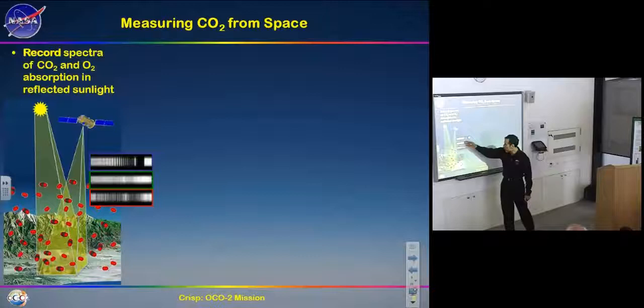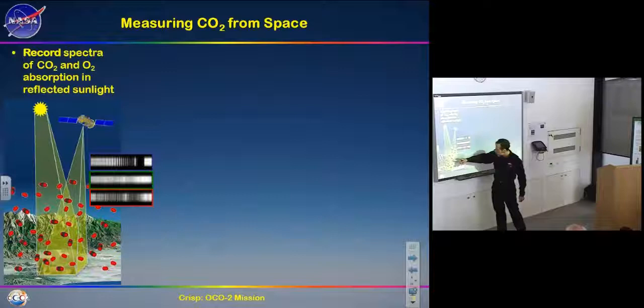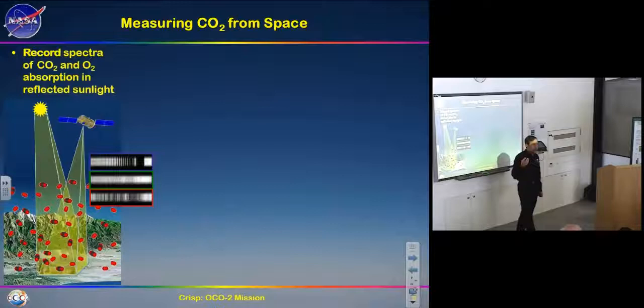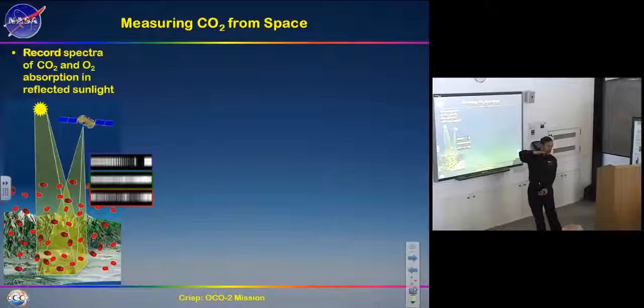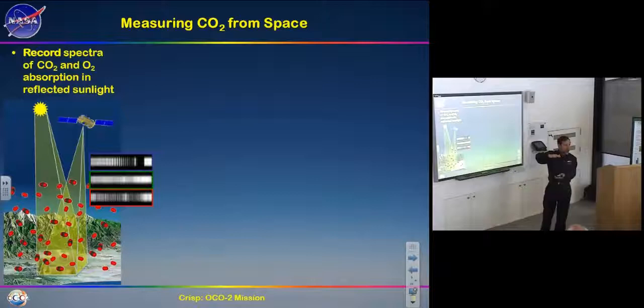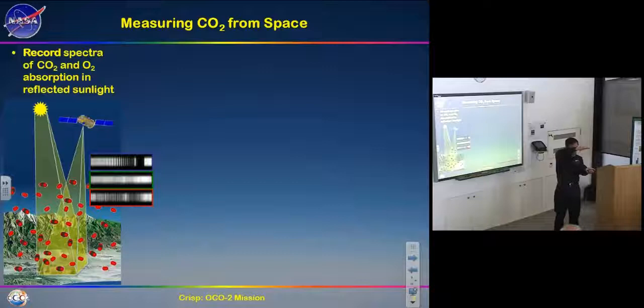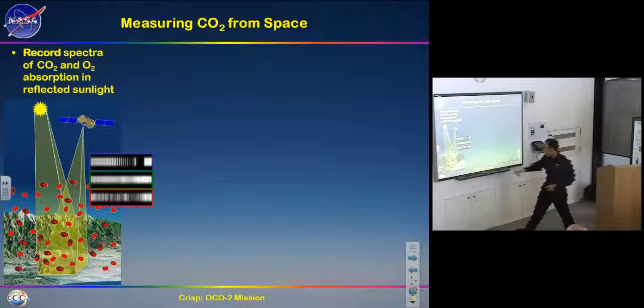The instrument measures three spectral bands: an oxygen A-band, and two CO2 bands. We measure oxygen as a proxy because it helps determine the path length — without knowing how long the path is and what the surface pressure is, a valley would show more CO2 and a mountain less, which isn't useful. What we want is the ratio of CO2 to dry air — a concentration — because if I see a higher concentration here and a lower one there, something is putting it in or taking it out relative to oxygen.